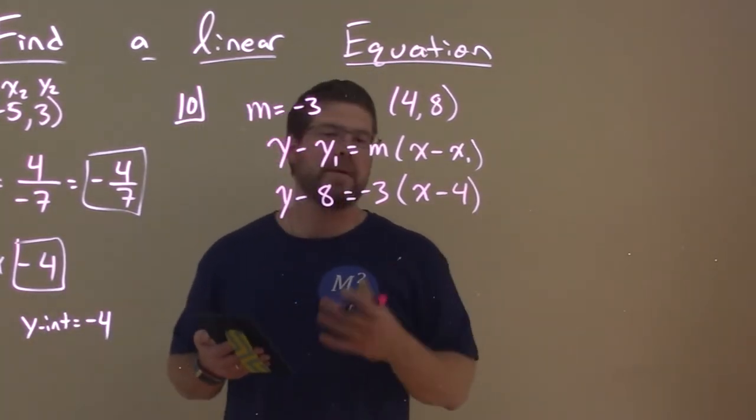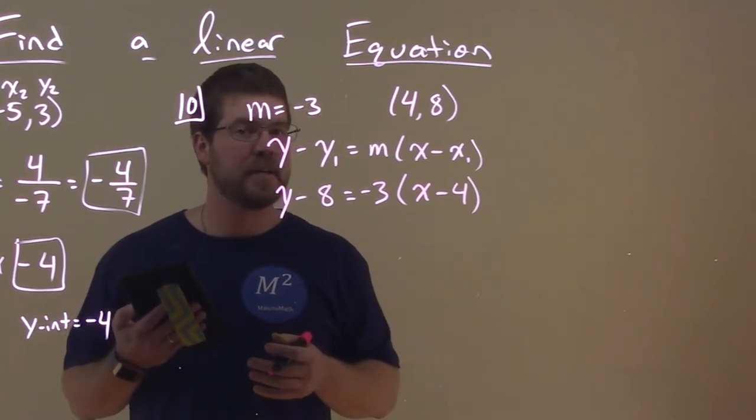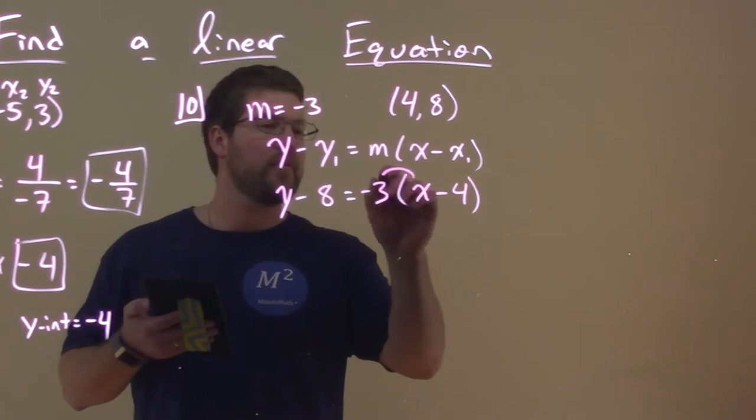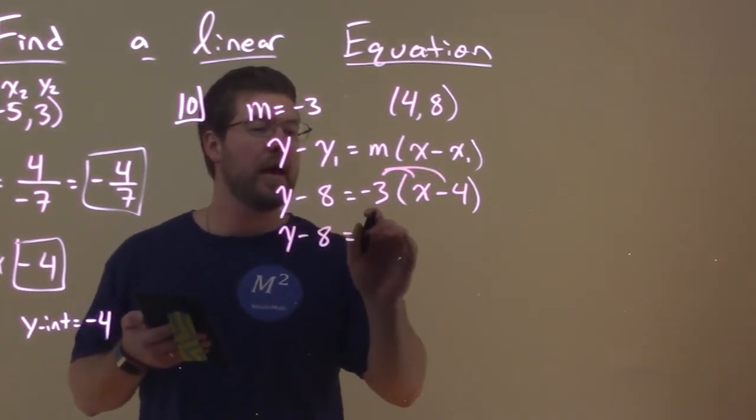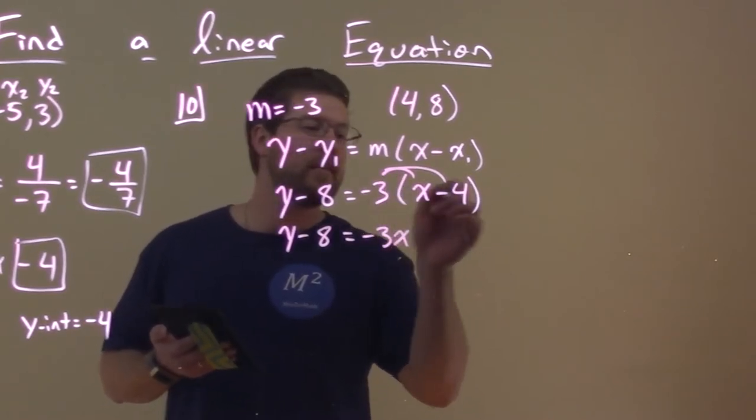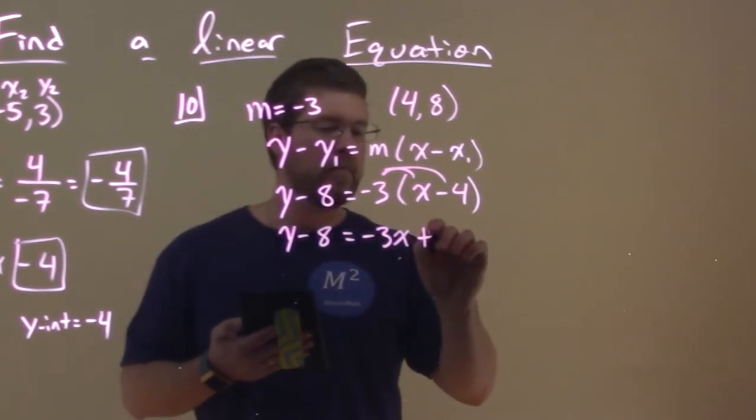Now let's rewrite this into slope-intercept form. How do we do that? Basically, just get Y by itself in trying to find the M value and B value. So we can distribute this minus 3 to both parts here. So we have Y minus 8 equals minus 3 times X is a minus 3X. And then minus 3 times a minus 4, double negative, multiplied to positive, plus 12.